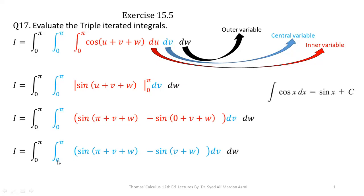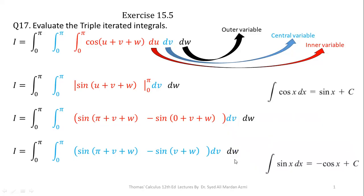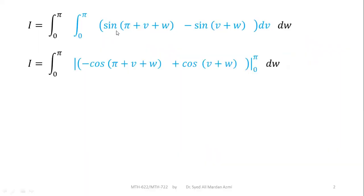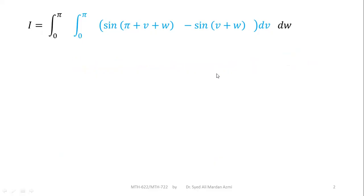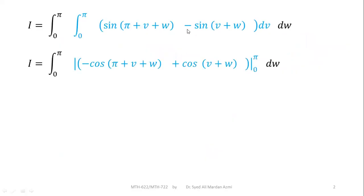In the next step, we will perform the integration with respect to v. Please note that with respect to v, w will behave like a constant. Remember, the integration of sin is minus cos. So when I apply the integral on each term inside the bracket, I will integrate sin of (pi + v + w) and sin of (v + w) individually. The integration of sin of (pi + v + w) is minus cos of (pi + v + w), and minus minus becomes plus, so the second term becomes plus cos of (v + w). Please consider this change of sign very carefully in the second term.